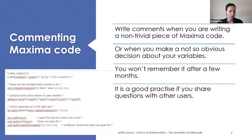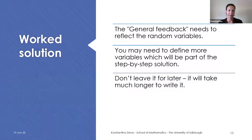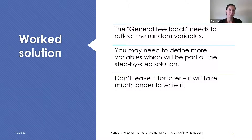Here's a small example from one of our questions. You can see comments about the random variable k, which says k needs to be larger than n, and some comments about what the functions are doing. If you have a very trivial question, you don't really need any comments, but that's fine. For the worked solution — the general feedback — it needs to reflect on the random variables. You may need to define more variables which will be part of the step-by-step solution. Please don't leave it for later; don't write the worked solution a month after creating the question, because it will take much longer. It's best practice to write the worked solution as you build your question.